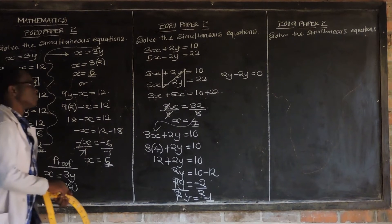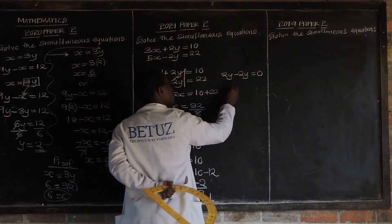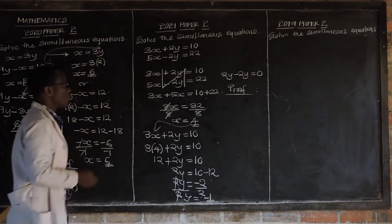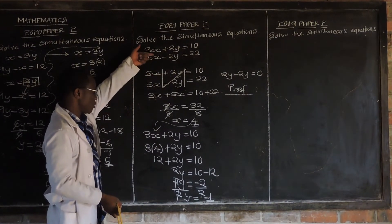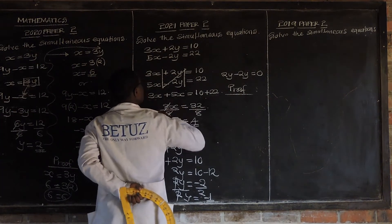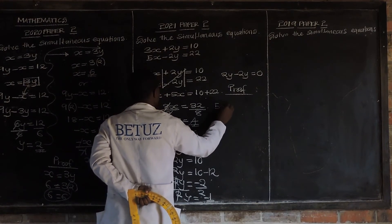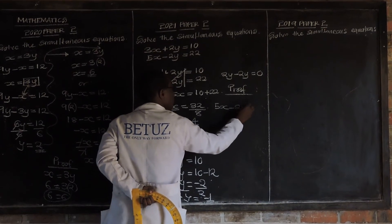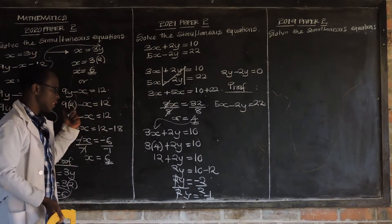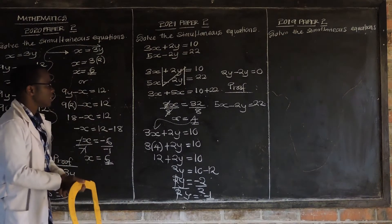Now, we can verify our answer. We can be sure if these answers are right. So, let us try to prove. So, we can use any of these two equations. We can use any of these two equations to do verification. Let us take the second equation which is given by 5x minus 2y is equal to 22. So, how do we verify? Just, where x is 4, we put 4 and where y is -1, we put negative 1.